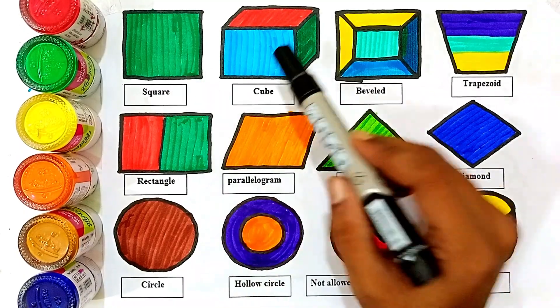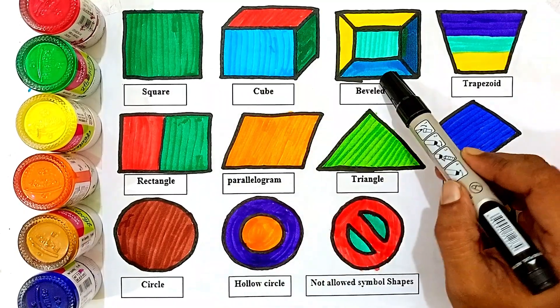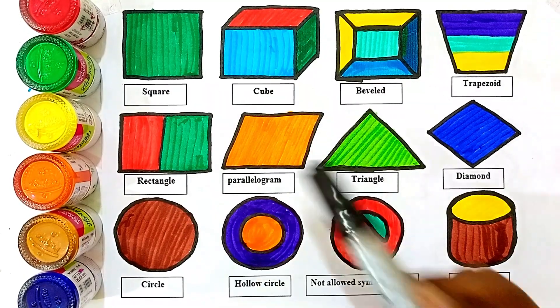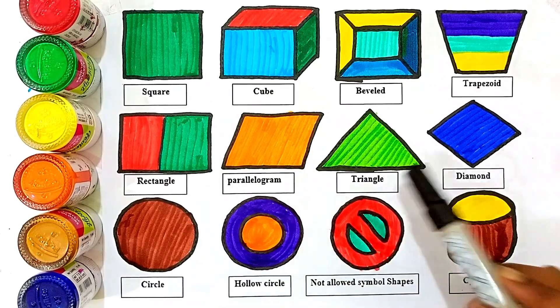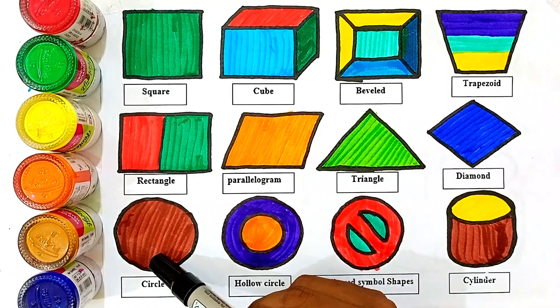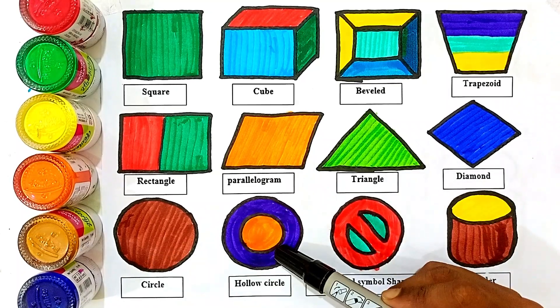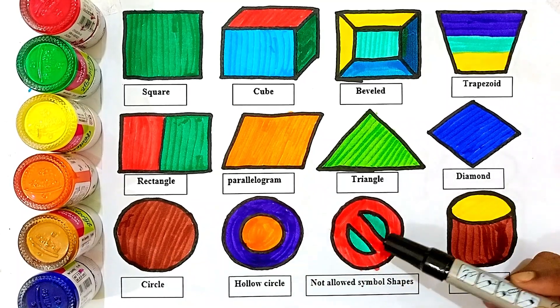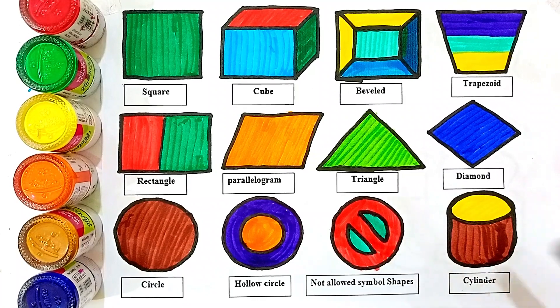Square, cube, bevel, trapezoid, rectangle, parallelogram, triangle, diamond, circle, hollow circle, not allowed symbol shapes, cylinder.